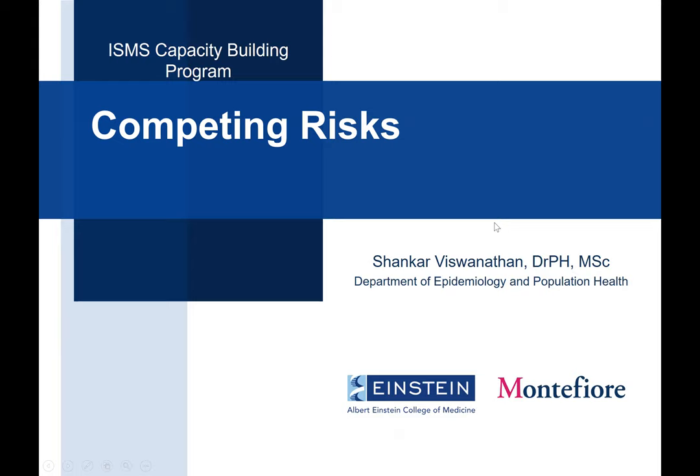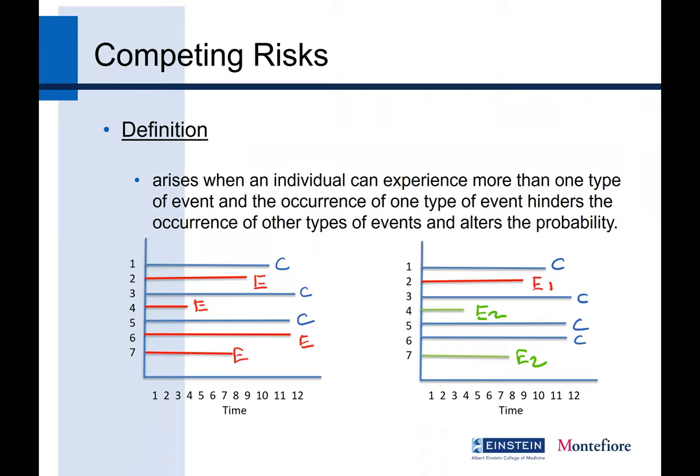Competing risk by definition: the situation arises when an individual experiences more than one type of event, or otherwise, you can think in terms of an occurrence of one type of event that can hinder other occurrences of an event.